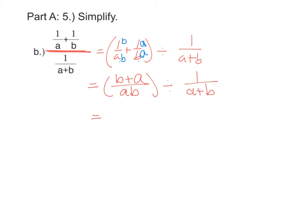Now, since we're dividing by a fraction, we have one fraction divided by another fraction. That's the same as multiplying by the reciprocal. So my first fraction, b plus a, order doesn't matter when we're adding, so that's the same as a plus b. Being divided by 1 over a plus b is the same as multiplying by the reciprocal, so it will be a plus b over 1.